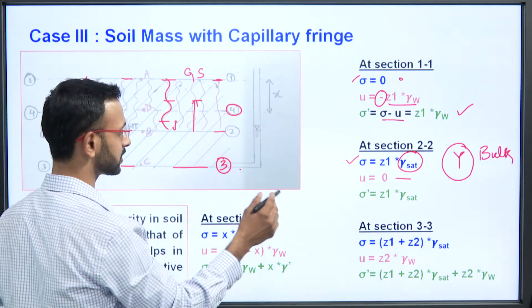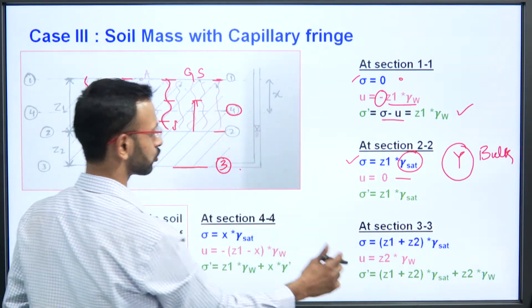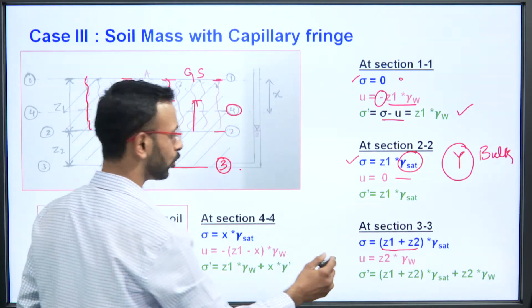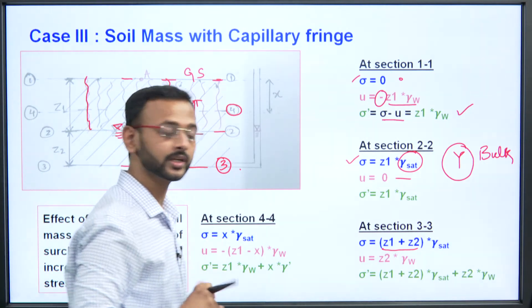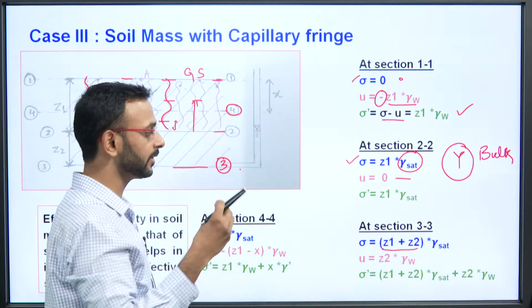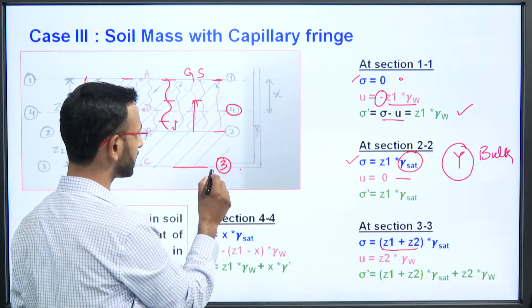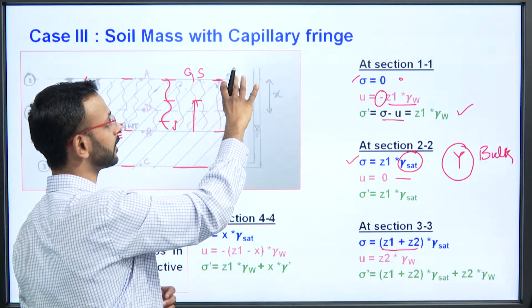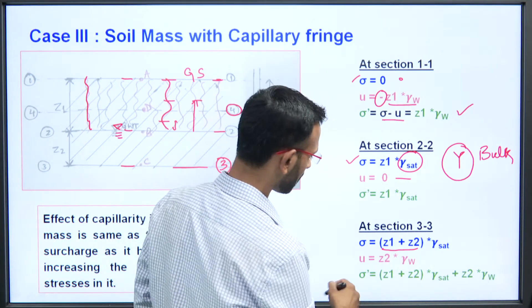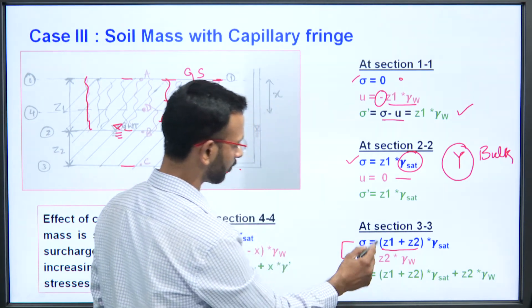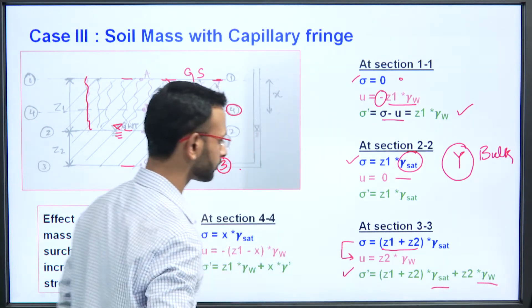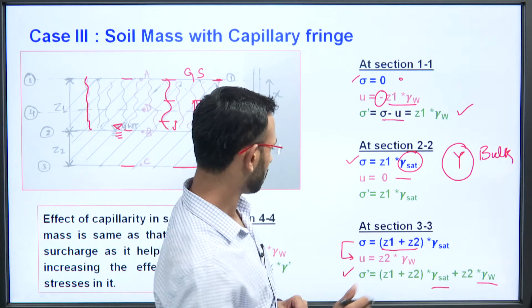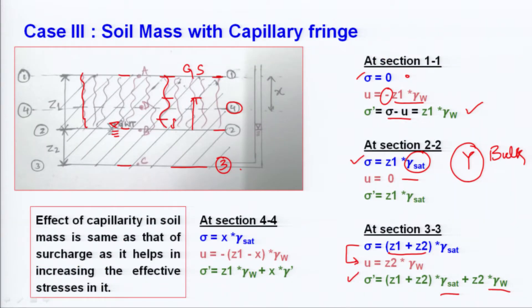At the bottom layer, section 3-3, the total stress is (z₁ + z₂) × γ_saturated, and pore water pressure is due to the groundwater table level. The capillary water does not exert pore water pressure at section 3-3 — capillary water is only relevant between sections 1-1 and 2-2. The effective stress is total stress minus pore water pressure, giving a value with minus z₂ × γ_w.